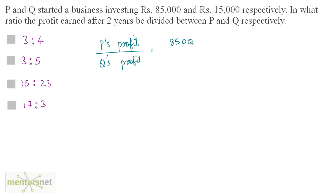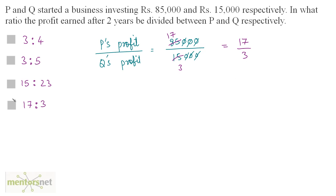So that is 85,000 divided by 15,000. The zeros get cancelled out and dividing numerator and denominator by 5: 5 times 3 is 15, and 5 times 17 is 85. So we have 17 by 3 as the ratio. The ratio is 17 is to 3, that is option D.